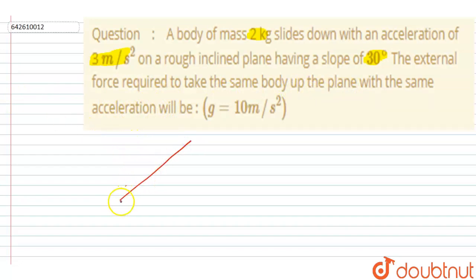Let's suppose this is the inclined plane and the inclination here is 30° as given in the question. And this is the block of mass 2 kg, and here the gravitational force along the inclined plane...